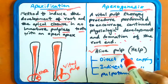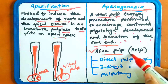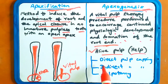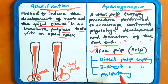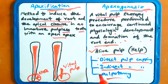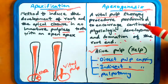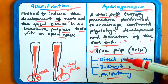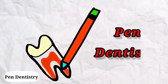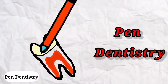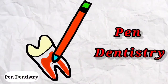There are three types of apexogenesis: first is direct pulp capping, second is indirect pulp capping, and third is pulpotomy. These topics are covered under apexogenesis. To know more about me, links are in the description box — don't forget to subscribe and like the video.